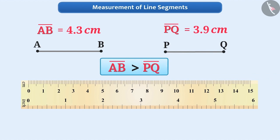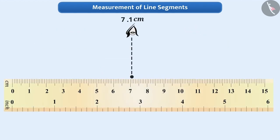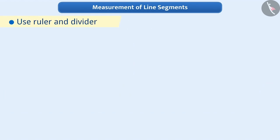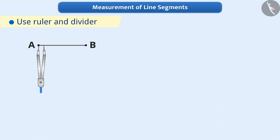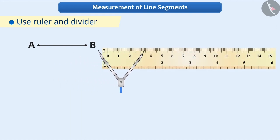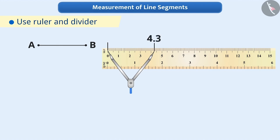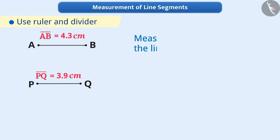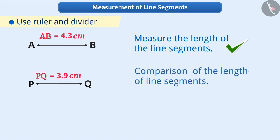While measuring the length of a line segment, we may face certain difficulties — if the position of our eye is not exactly above the mark, meaning looking slightly sideways may lead to wrong measurements. We use a ruler and divider to avoid such mistakes. Suppose we need to measure the length of line segment AB. For this, we open the divider and place the endpoint of one arm on A and the endpoint of the second arm on B. Then, maintaining the same distance in the divider, we place the endpoint of one arm on zero of the ruler and find out the position of the endpoint of the second arm. This will be the length of the line segment. Like here, AB is equal to 4.3 centimetres. Similarly, PQ is equal to 3.9 centimetres. With this method, we can find out the length of any line segment and also compare them by measuring their lengths.